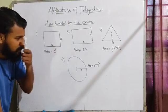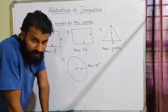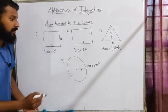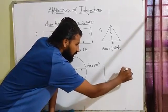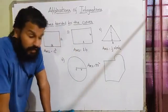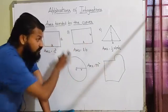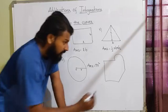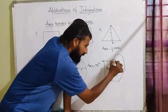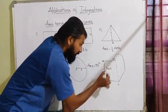Also, in your 10th standard you had a chapter called mensuration, where you calculated the area of irregular shapes. For example, you might have a shape like this, and you need to find its area. What you did was convert the irregular shape into known shapes — a rectangle here, a triangle there — and then apply the known formulas to find the area of each part.